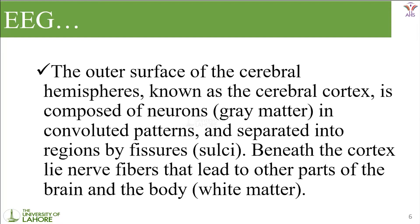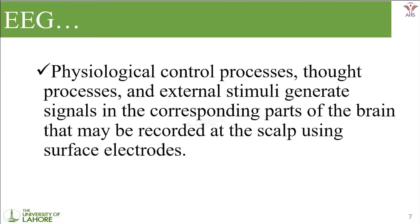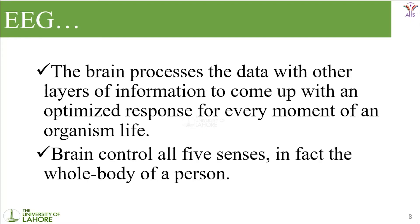Beneath the cortex lie fibers that lead to other parts of the brain and the body. Physiologically, the brain controls our thought processes, and external stimuli generate signals to corresponding parts of the brain. We can record all of these electrical signals and responses by using surface electrodes or scalp electrodes. When we record these electrical stimuli, this process is known as electroencephalogram. The brain processes data with layers of information to come up with an optimized response for every moment of an organism's life.